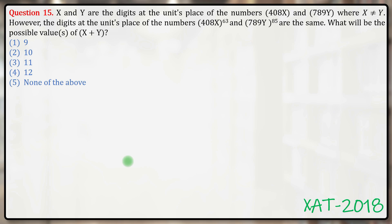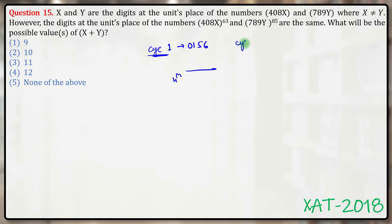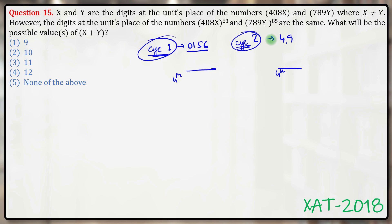The question talks about the units digit. From the basics, the units digit will always repeat after four powers — whether the cyclicity is 1 (as with 0, 1, 5, 6), cyclicity 2 (as with 4 and 9, repeating every second step, and hence every fourth step), or cyclicity 4. So the units digit always repeats after every fourth power.